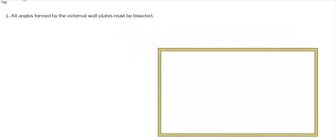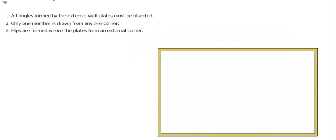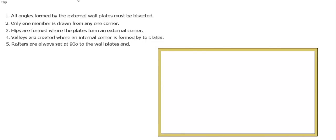Rule 1: all angles formed by external wall plates must be bisected — the angle must cut the corner in half. Rule 2: only one member is drawn from any one corner. Rule 3: hips are formed where the plates form an external corner. Rule 4: valleys are created where an internal corner is formed by two plates — we'll see that in a couple of videos' time. Rule 5: rafters are always set at 90 degrees to the plates.